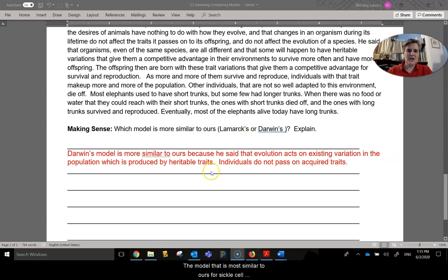The model that is most similar to ours for sickle cell disease is Darwin's. Darwin indicates that it is a heritable trait. It is something that is genetically passed on from the parent generation to the offspring generation, and that is what happens over time for the gene that is advantageous, so the one that survives to produce their offspring. The gene that is disadvantageous or not advantageous generally does not survive as often to produce their offspring, so we will see fewer and fewer of those individuals.